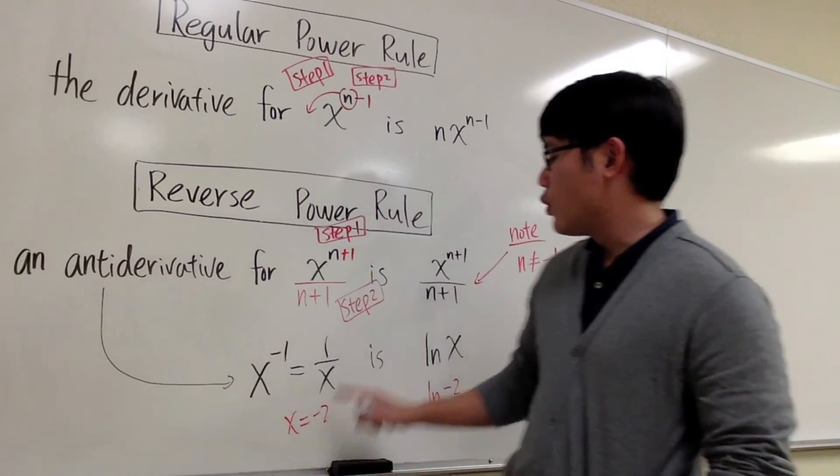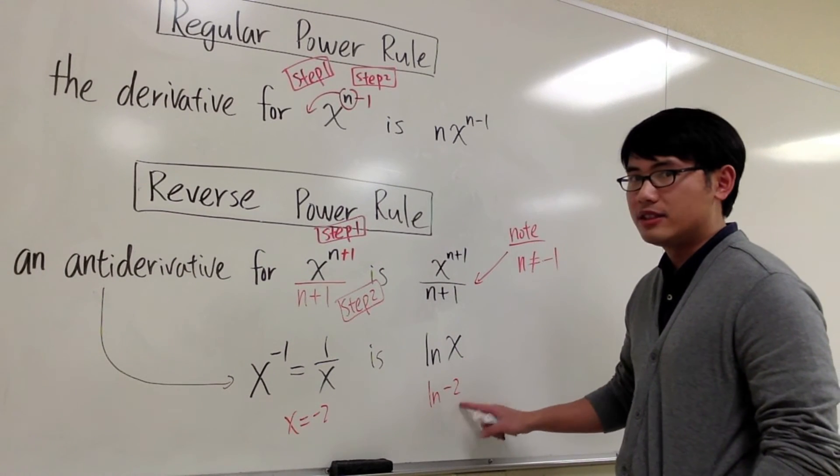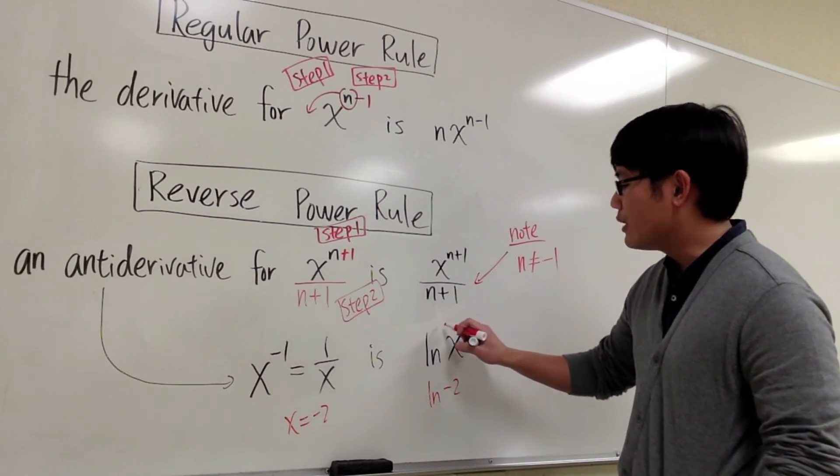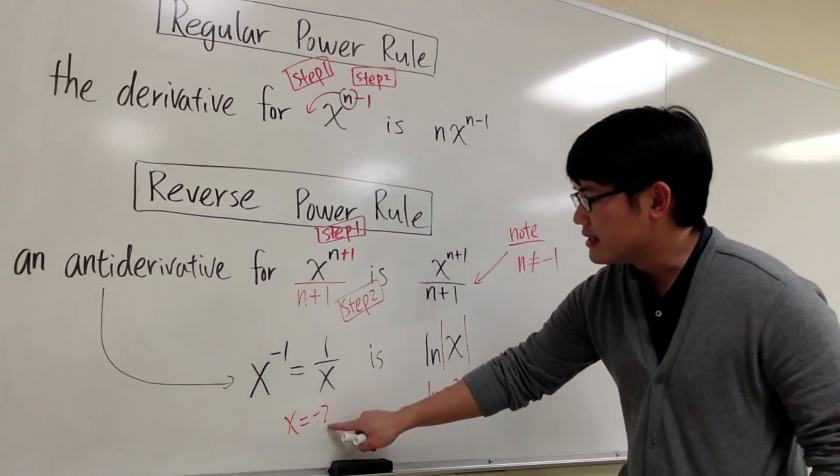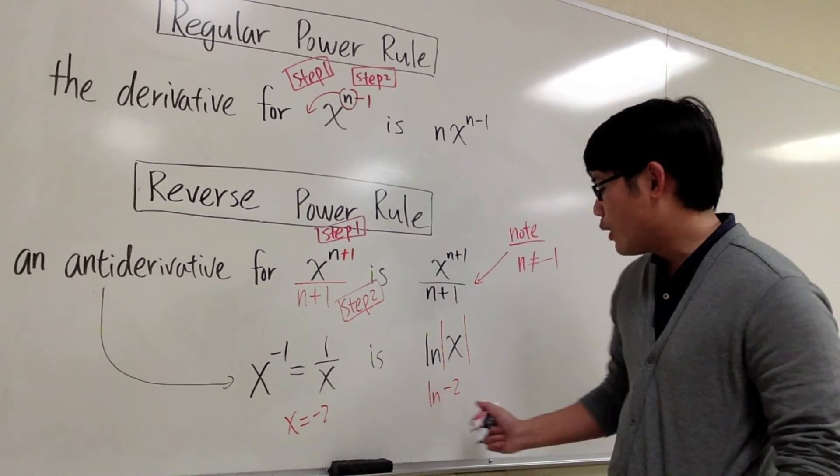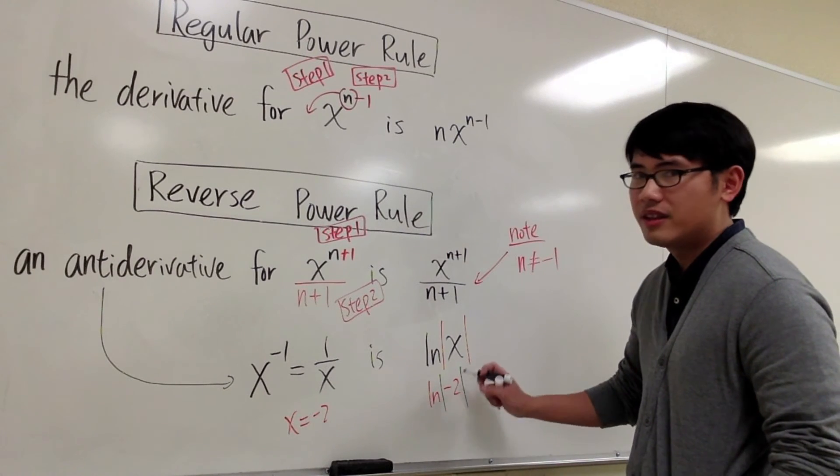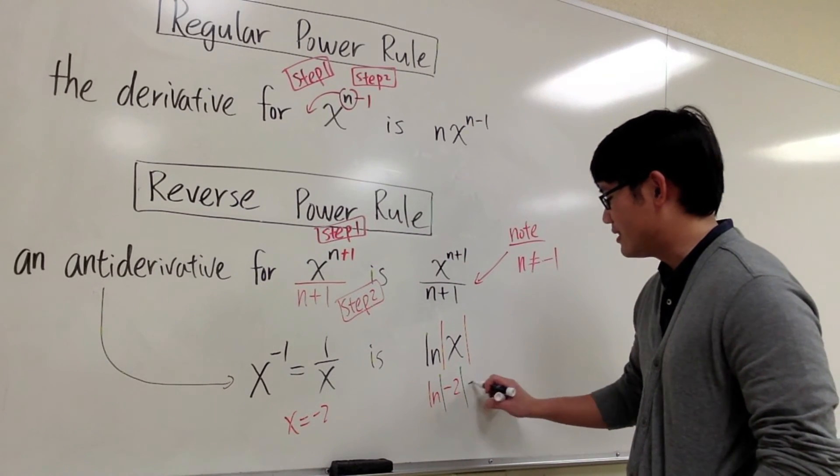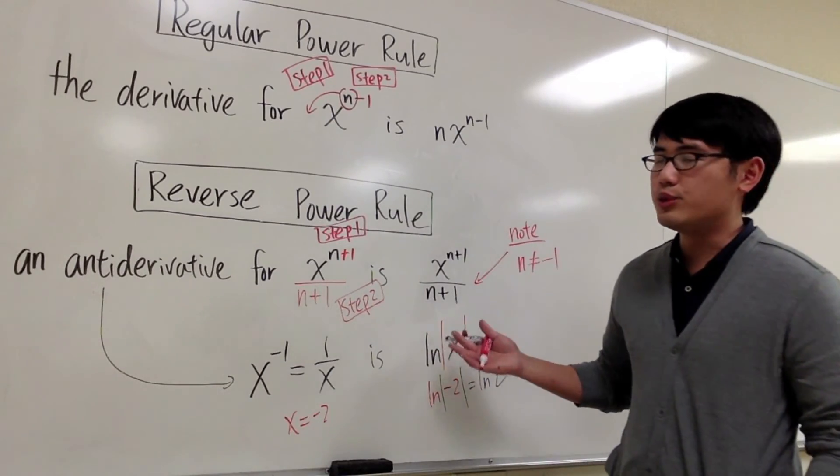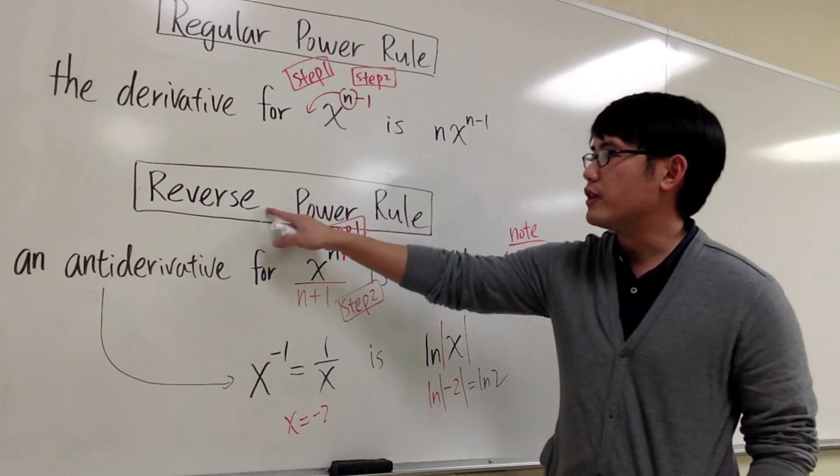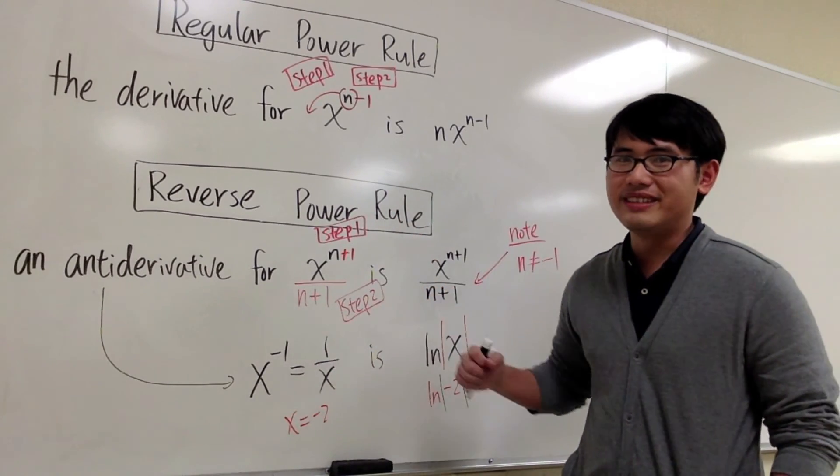So what we do is this. An anti-derivative for 1 over x is not only ln x. Because we have to avoid this situation from happening, we are going to attach an absolute value around the x. This way, when x is equal to negative values, we are okay because we are going to end up with ln x, but the absolute value will make the negative values positive. So this is going to be okay. This is just ln 2. And this right here completes the situation where you are trying to do the reverse power rule when n is not negative 1 and when n equals negative 1. So this is it.